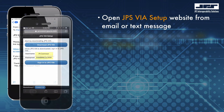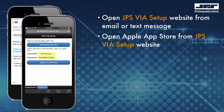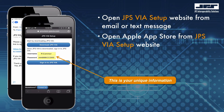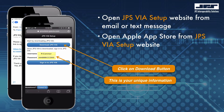On the JPS VIA setup website, you should see your username and your password. It might be a good idea to save this information for later use. Next, click on 'Download JPS VIA' to open the App Store on your device.